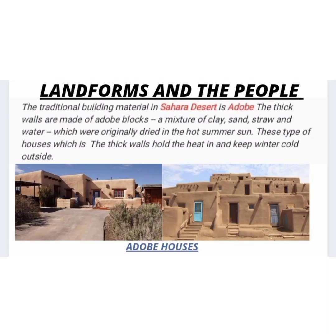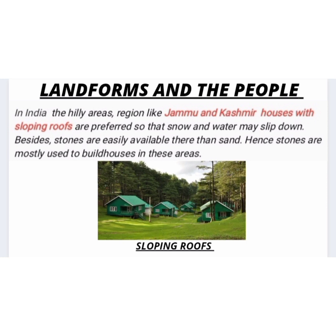The traditional building material in the Sahara Desert is adobe — thick walls made up of adobe blocks. Adobe blocks are a mixture of clay, sand, straw and water, which were originally dried in the hot summer sun. These thick-walled houses hold the heat in and keep the winter out. In India, in hilly areas like Himachal Pradesh and Jammu and Kashmir, the houses have a slanting roof rather than a flat roof. This is because mountain regions receive heavy rainfall and snow, so slanting roofs prevent water and snow from accumulating.